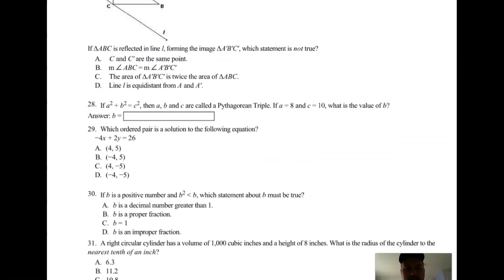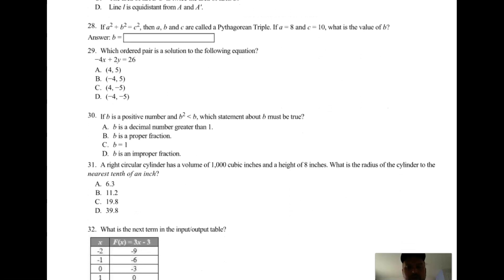29: which ordered pair is the solution to the following equation? So all you do is take one of these ordered pairs and plug it in and check it. For this first one here: negative 4 times 4 plus 2 times 5, does that equal 26? Is negative 16 plus 10 equal to 26? Nope. So try the next one. Negative 4 times negative 4 plus 2 times 5, does that equal 26? Well negative 4 times negative 4 is 16, 2 times 5 is 10. Is 16 plus 10 equal to 26? Yep, got her.